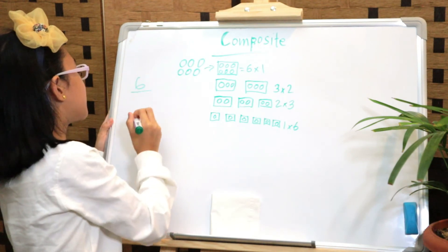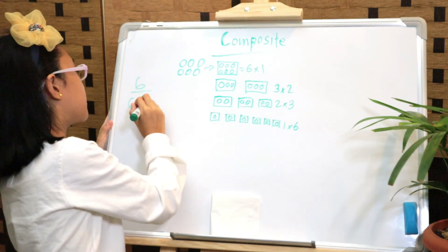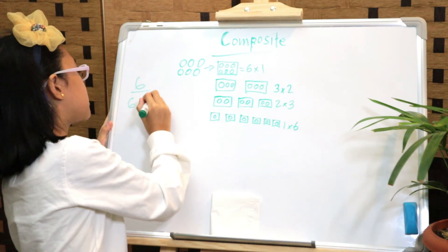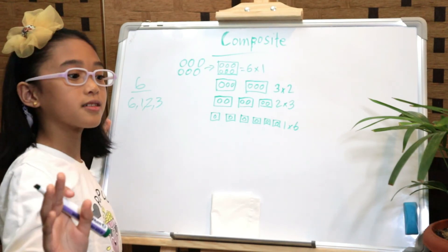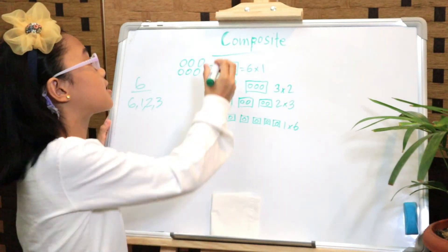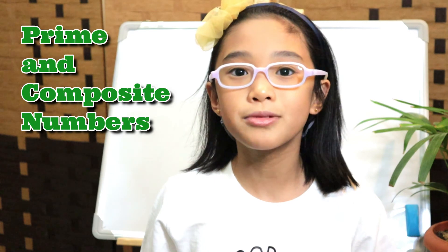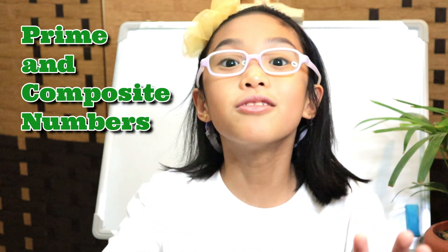So it's one times six. The factors of six are one, two, three, and six — four factors — so it is a composite number. That is how to identify prime and composite numbers. Did you know that all even numbers are composite numbers except two? I hope you learned something from me today, bye!